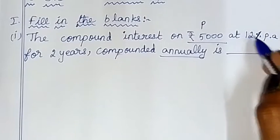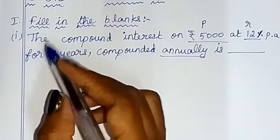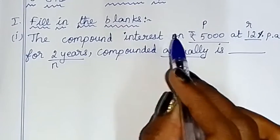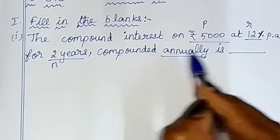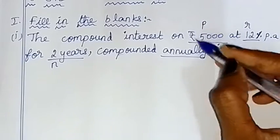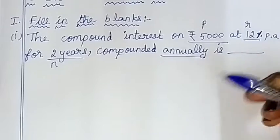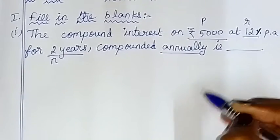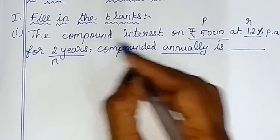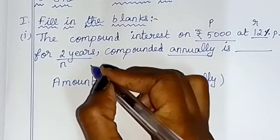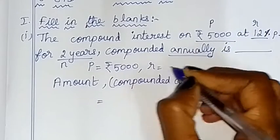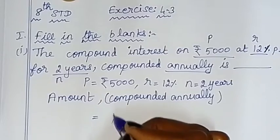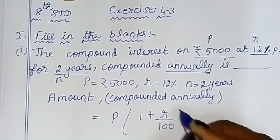The rate of interest is 12% per annum, and the number of years is 2. The formula for amount compounded annually is: Amount = P into (1 + R by 100) whole power n. Here, principal P is equal to Rs.5,000, R is equal to 12%, and n is equal to 2 years.